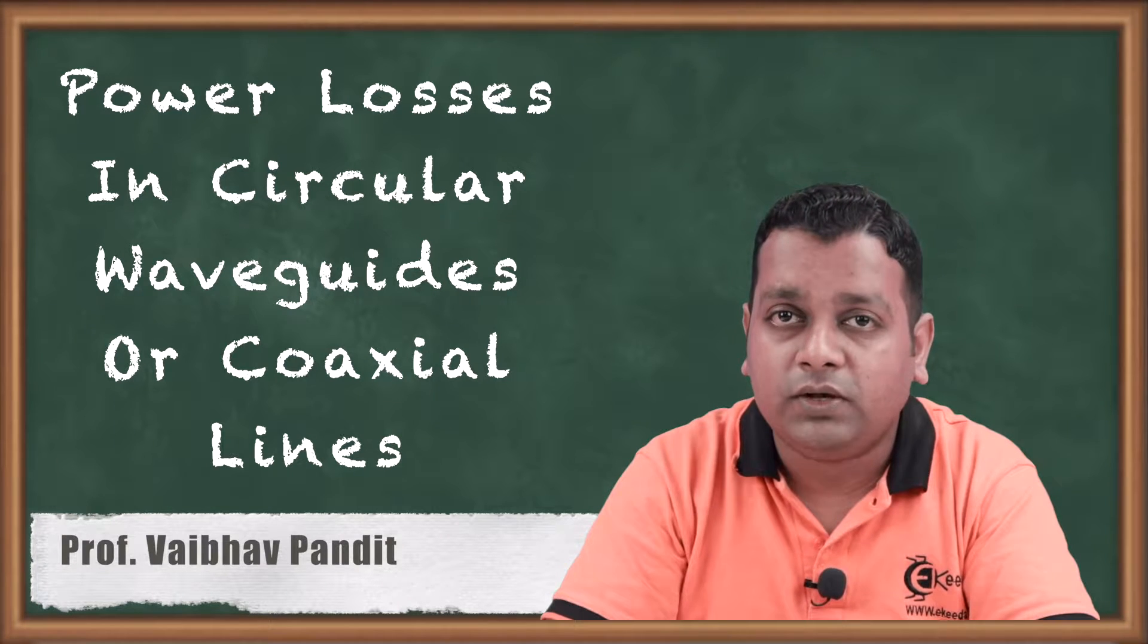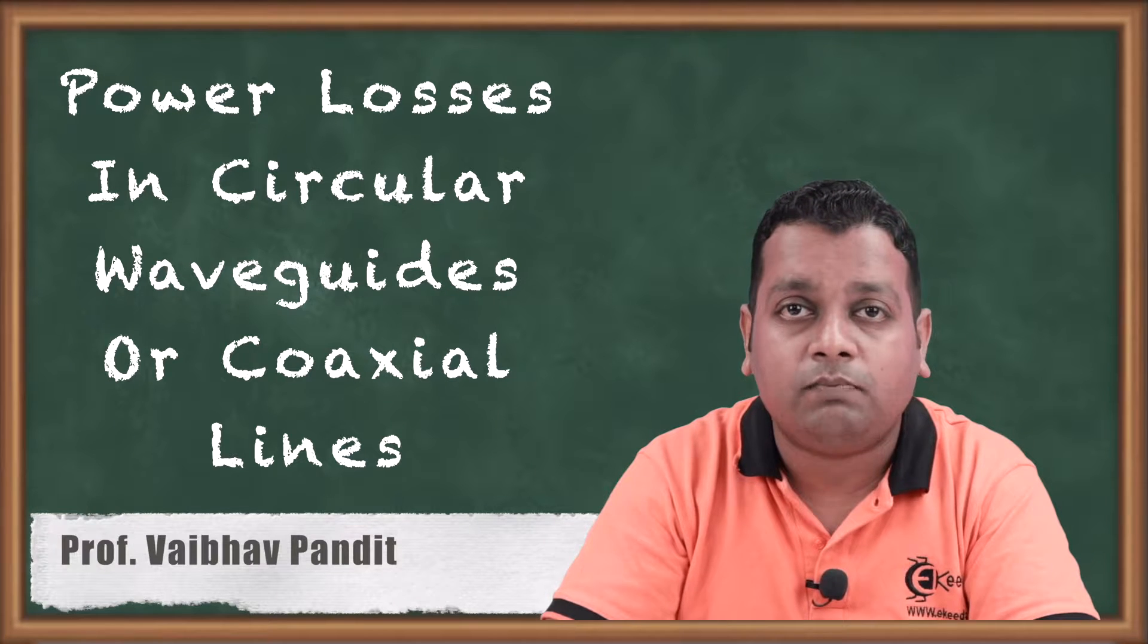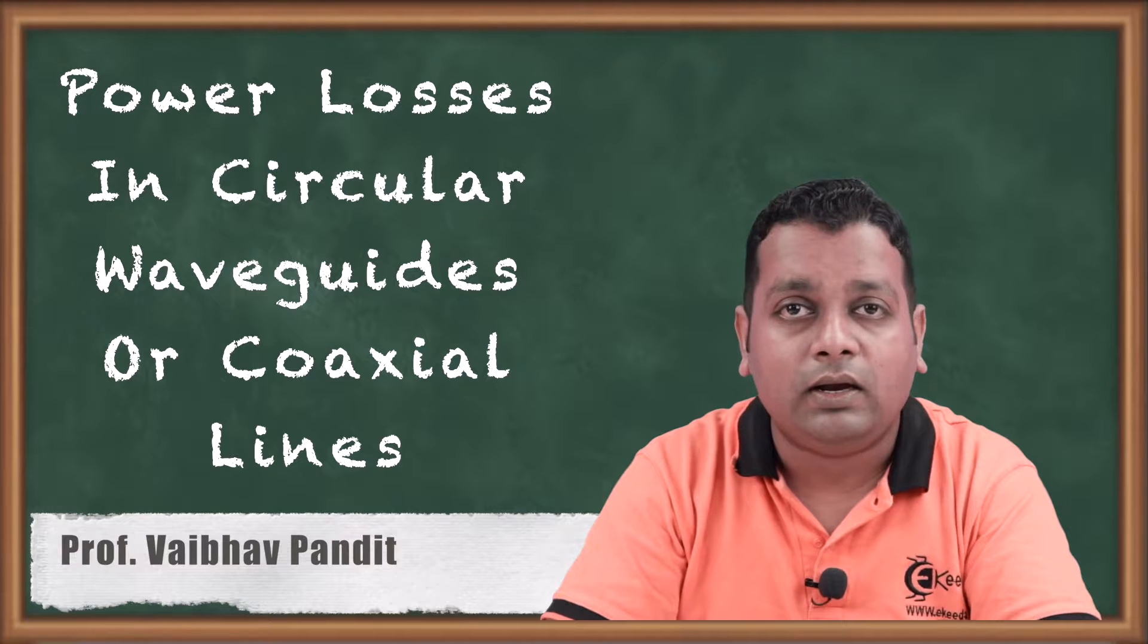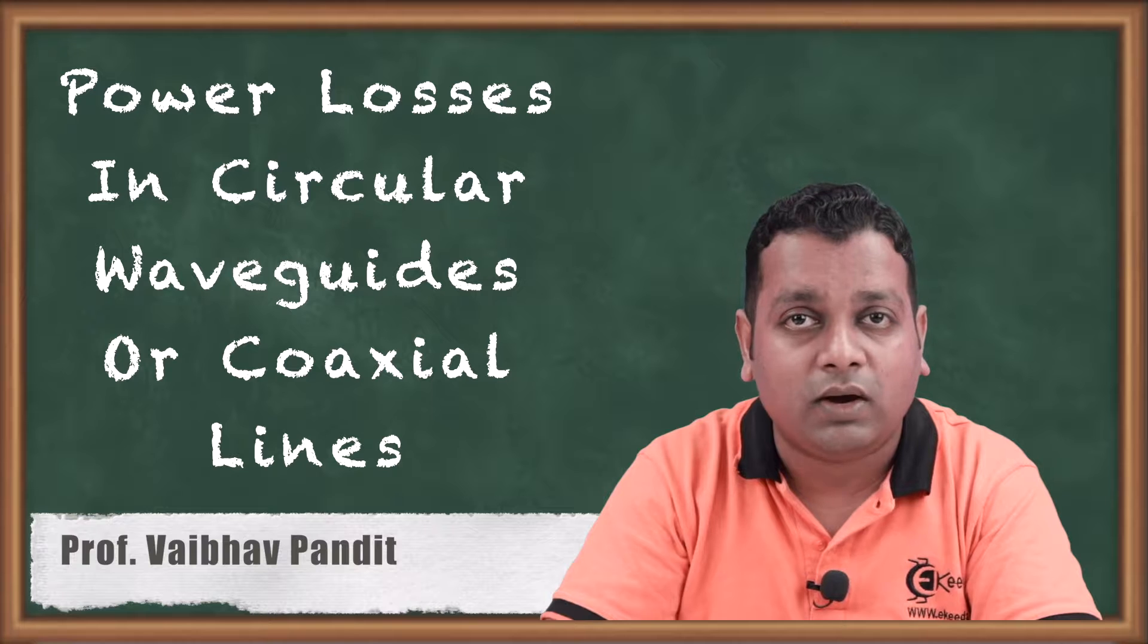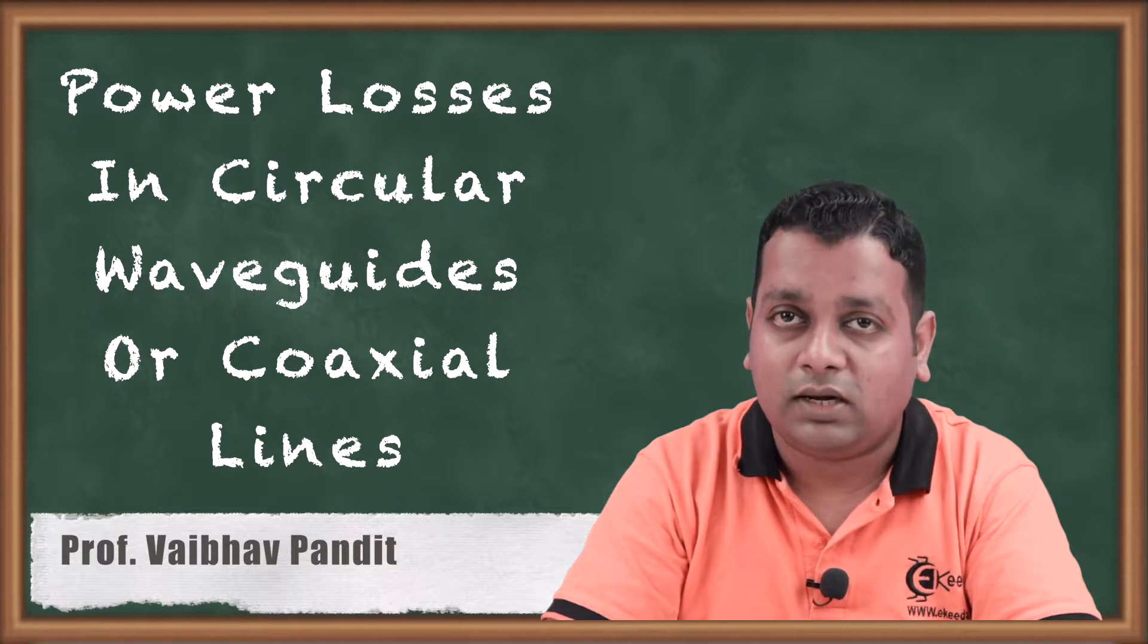Now, as in the previous videos we have dealt with the modes of propagation, then power transmission and solved several problems onto it. Let us address what can be the power losses associated with the circular waveguide and the conventional coaxial transmission line.